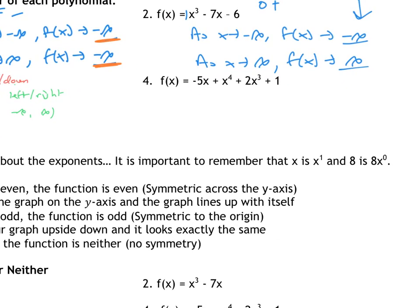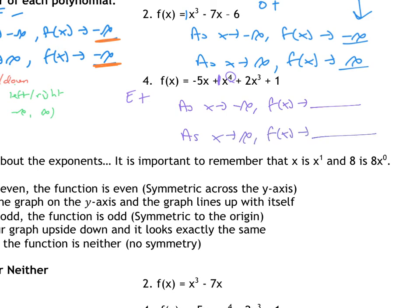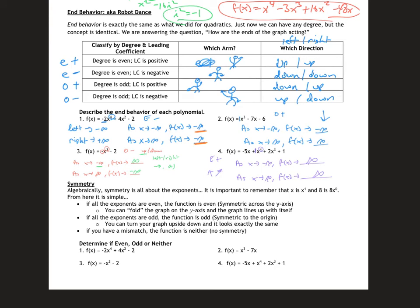Last end behavior example: degree is 4, so even, and leading coefficient is 1, so positive — make sure to put it in standard form. Even and positive means both ends go up. As x approaches negative infinity, f(x) approaches positive infinity; as x approaches positive infinity, f(x) also approaches positive infinity. You're writing the same structure every time — just look at your chart. If going up it's positive infinity; going down it's negative infinity.